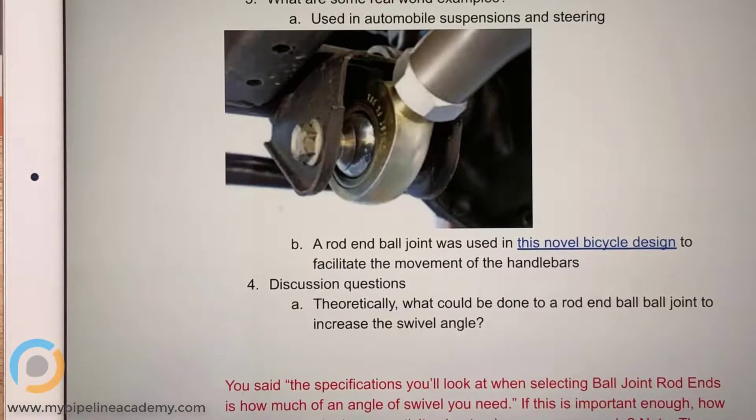Theoretically, what could be done to a rod end ball joint to increase the swivel angle? And is it worth talking about the swivel angle? Did that make sense or should we go over what the swivel angle means? Could you show us what the swivel angle means?